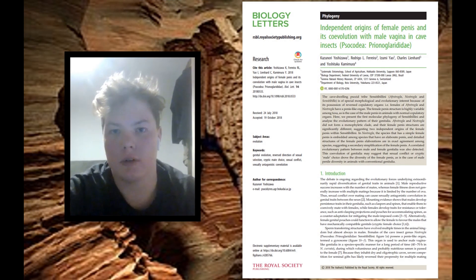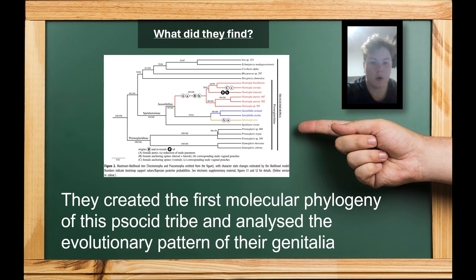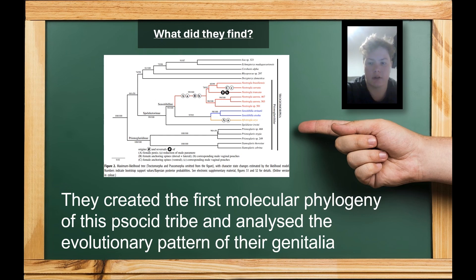What is the importance of this paper and why is it a good example of conflict and selection? Yoshizawa et al. created the first molecular phylogeny of the squid tribe and analysed the evolutionary patterns of their genitalia. Different members of the taxonomic family have varying complexity of female penis structure.